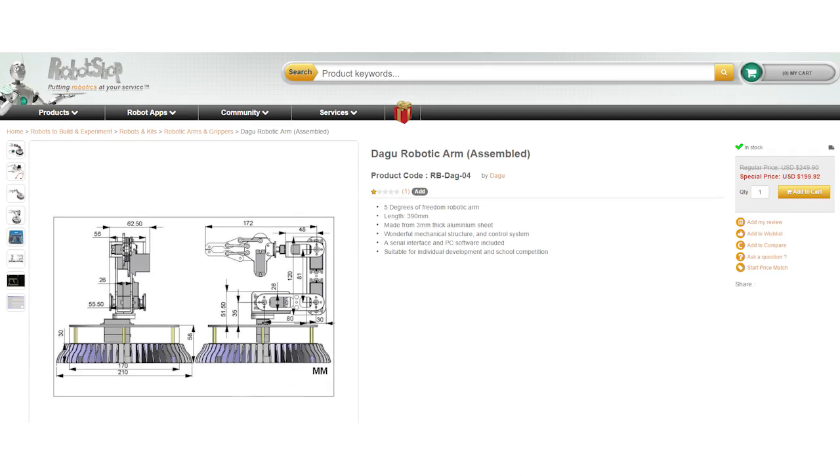Also if you want to control it with your gestures like the video above, check out this full project with codes on Instructables. The Dagu Robotic Arm is also available on Robotshop for $249.99.